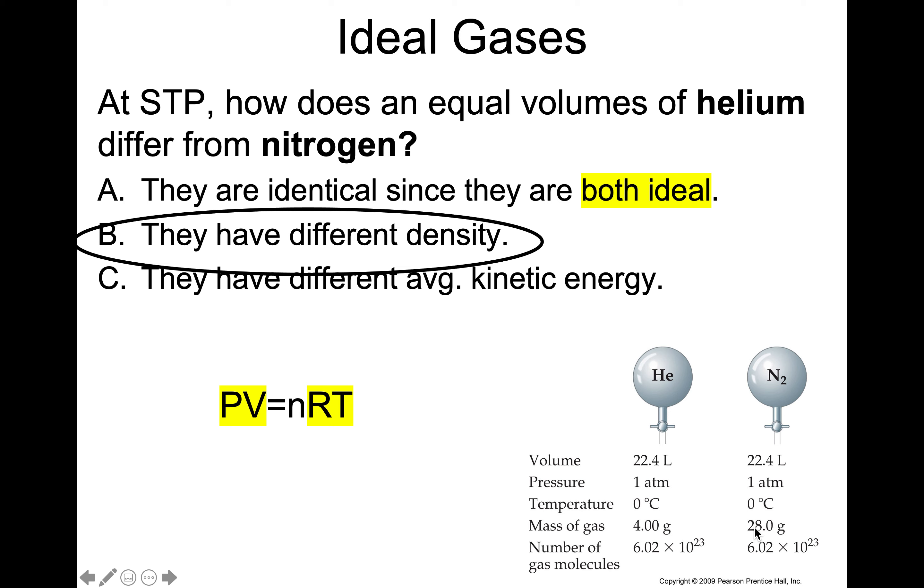That doesn't mean that the particles themselves have the same mass. Helium and nitrogen gas, those particular particles or molecules, have different masses. So if everything else is the same, they end up with a different density. The idea that they have the same or different average kinetic energy - that's something we're going to explore in this video. The average kinetic energy, this is what the temperature is measuring.